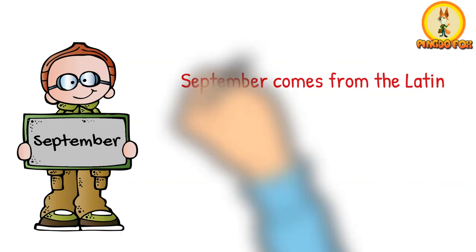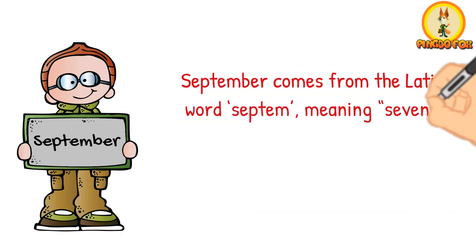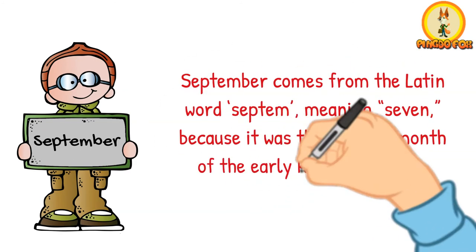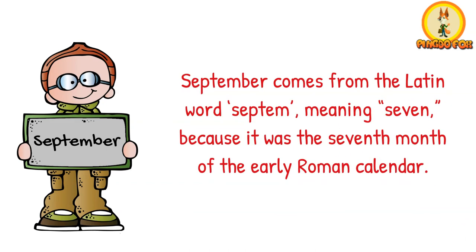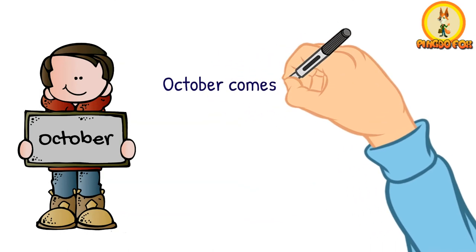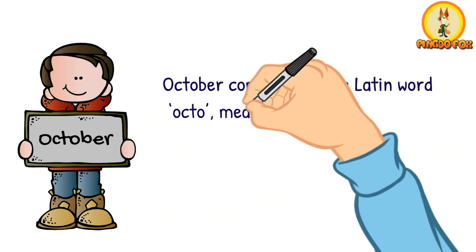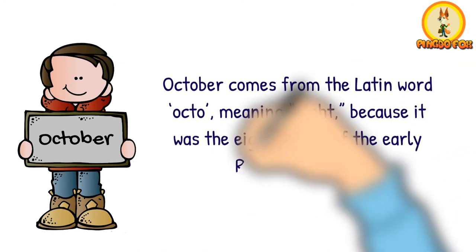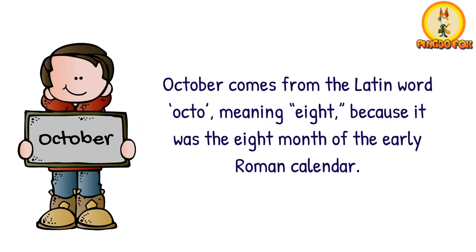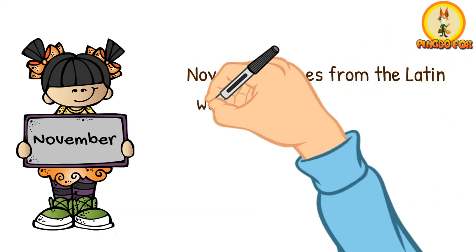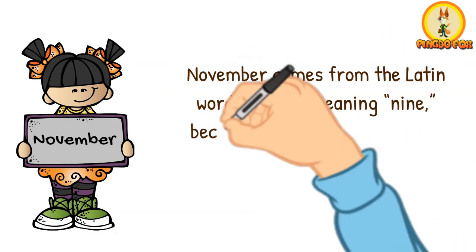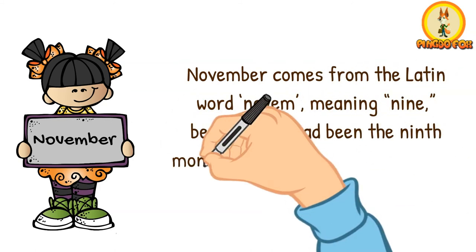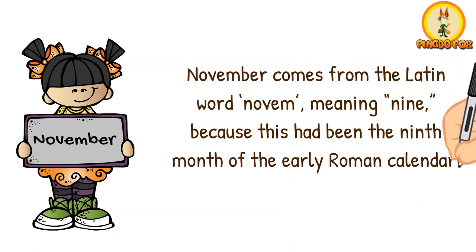September comes from the Latin word "septem," meaning seven, because it was the seventh month of the early Roman calendar. October comes from the Latin word "octo," meaning eight, because it was the eighth month of the early Roman calendar. November comes from the Latin word "novem," meaning nine, because this had been the ninth month of the early Roman calendar.